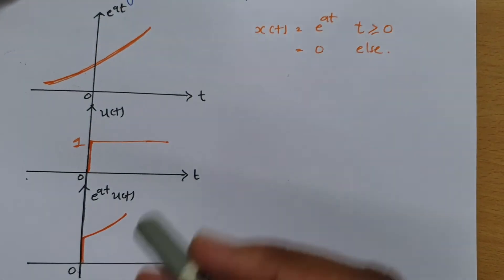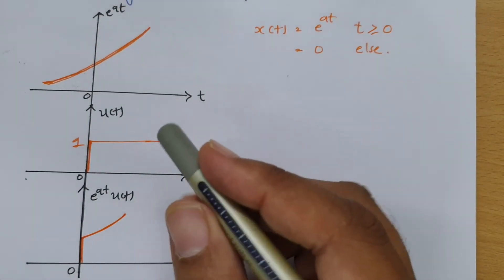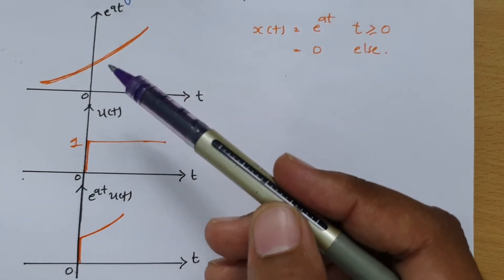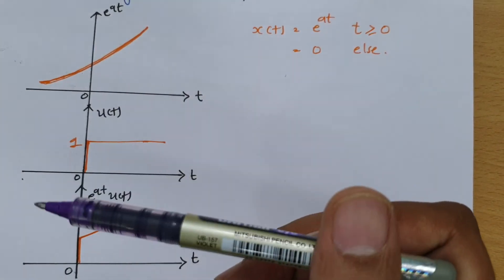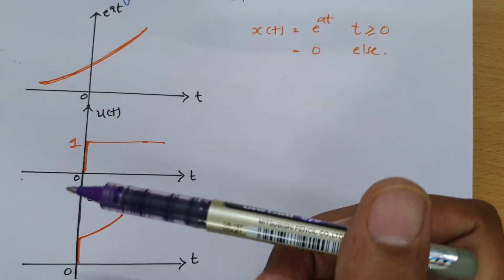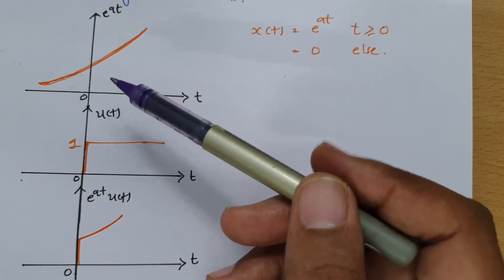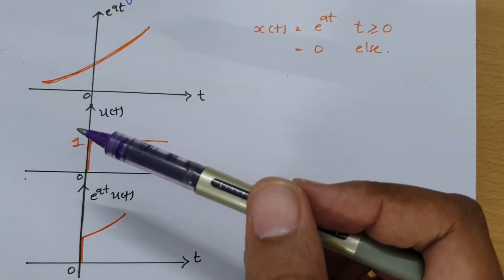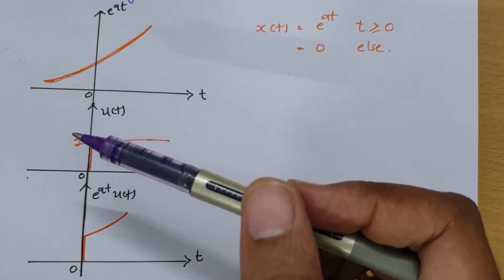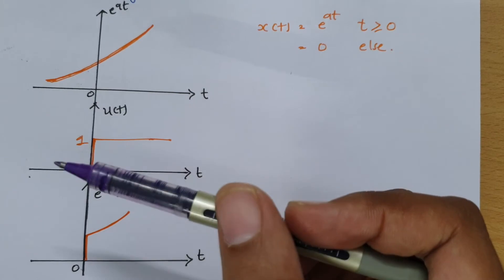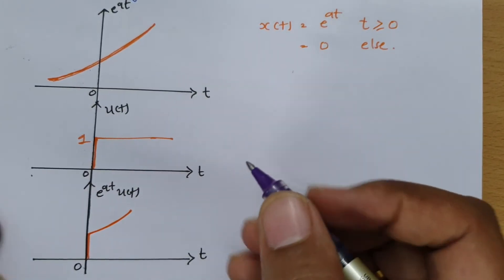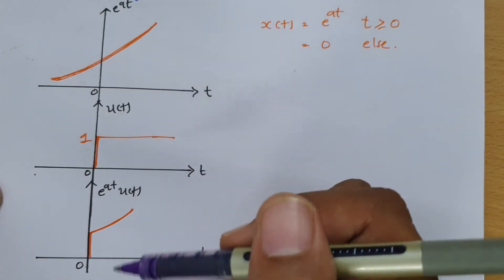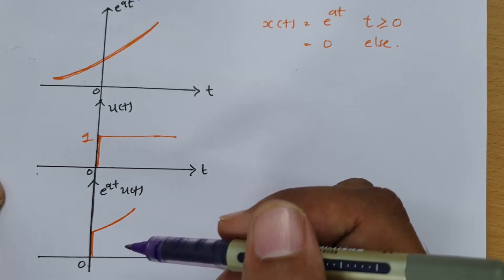Whenever you calculate energy and power, if the signal is not periodic, you should calculate energy first, and then if it is not an energy signal, you should calculate power. This signal is not periodic, so we will be calculating energy first.